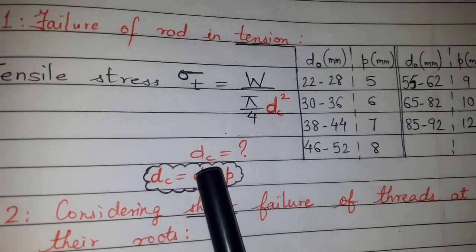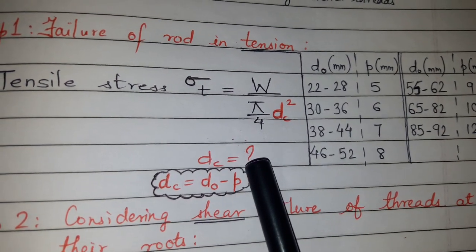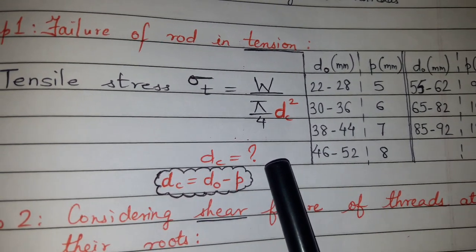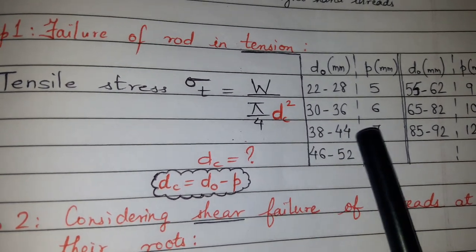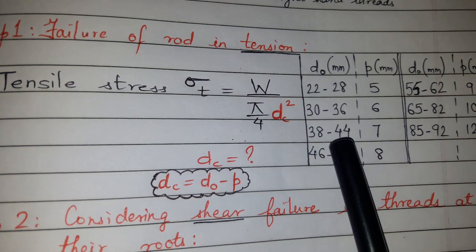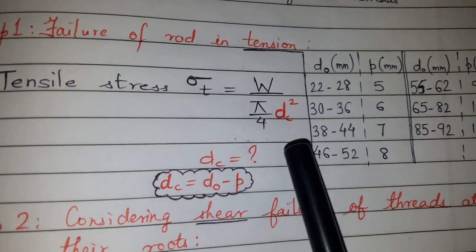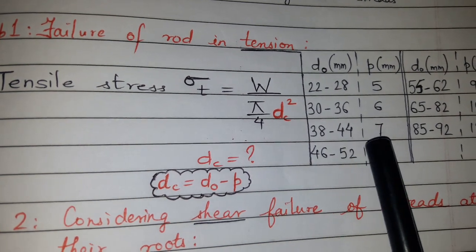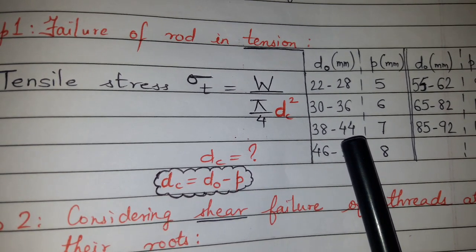Once you get DC, you can select D0 from here. For example, you got DC as 33.5. If you see, the selected will come in this range, because if you take 44 and minus 7, you get 37, which is on a higher side.